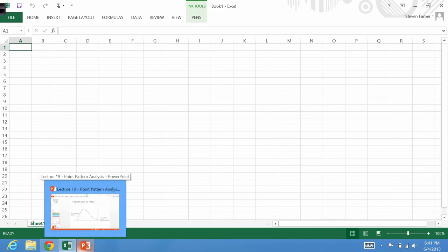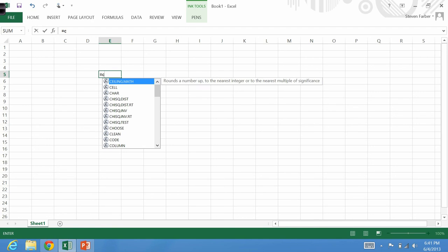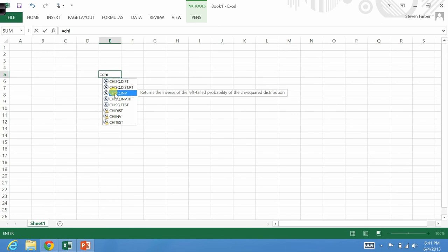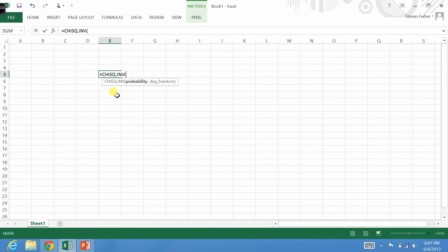So here we have Excel, and we can use a function called the chi-squared inverse function. It returns the inverse of the left tail probability of the chi-squared distribution. Essentially, we enter in the probability and the degrees of freedom, and this function gives us a critical value. So if we were interested in a left tail being 5% of the area, 0.05, we put 5% as the probability. In our case, we have m minus 1 degrees of freedom, so 10 minus 1, we can put a 9 there. And that tells us that the critical value is 3.325.